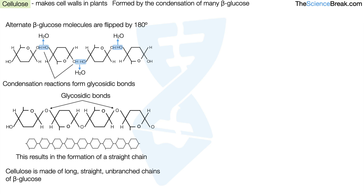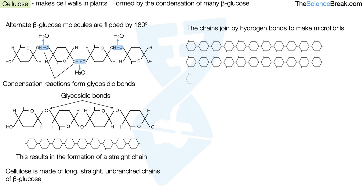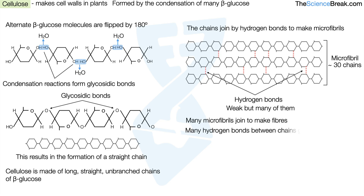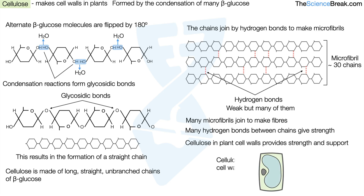Cellulose is made of long, straight, unbranched chains of beta glucose. The chains join together by hydrogen bonds to make structures called microfibrils. Hydrogen bonds are weak, but there are many of them to give collective strength. A microfibril contains around 30 to 40 chains joined together. Many microfibrils join to make fibres, with many hydrogen bonds between the chains to give strength. Cellulose in plant cell walls provides strength and support.